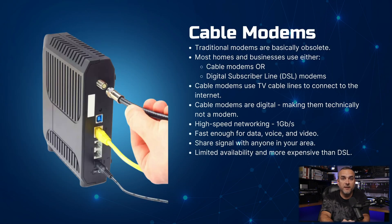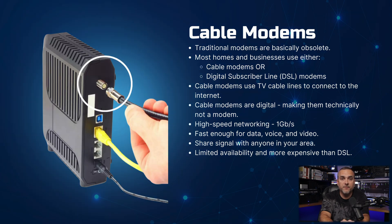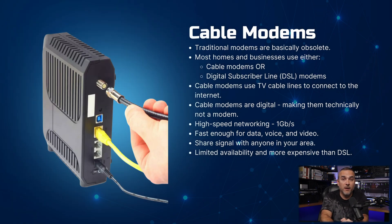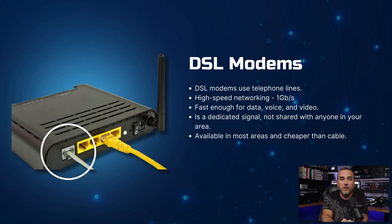Traditional modems are now considered obsolete, as most homes use cable modems or DSL modems. Cable modems use TV cable lines for internet connectivity, are digital, and offer high-speed networking up to 1 Gbps, suitable for data, voice, and video. However, they share the signal with others in the area, have limited availability, and tend to be more expensive. DSL modems use telephone lines to provide high-speed networking also up to 1 Gbps. DSL offers a dedicated signal not shared with others, is widely available, and is typically more affordable than cable.